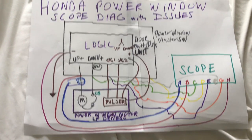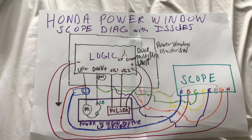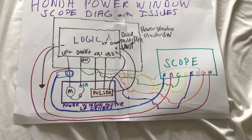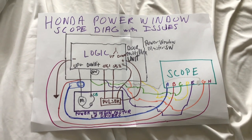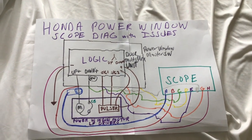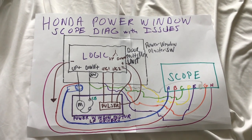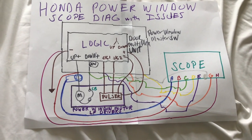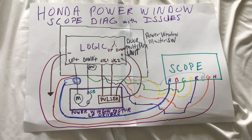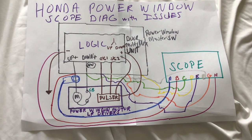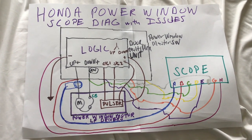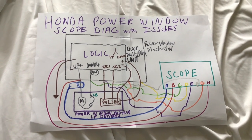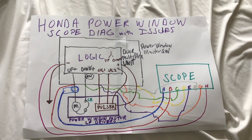Channel G is the ground to the pulser assembly, and Channel H burgundy is the ground for the entire door multiplex unit. We're not going to concentrate too much on powers and grounds — they're all good. But be mindful: anytime something is intermittently not working, you want to check those powers and grounds because if compromised they can cause issues. In this case they are not the issue — the issue is the door multiplex unit assembly intermittently sticking. The switches are sticking, and I'll tell you that right up front.